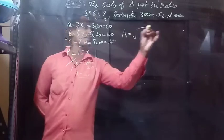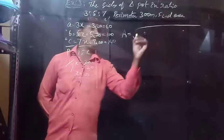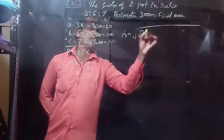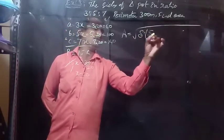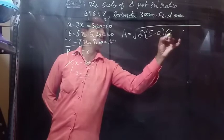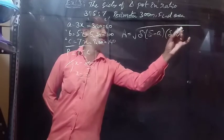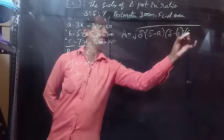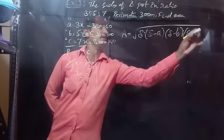We have the formula: Area A is equal to √(S × (S−a) × (S−b) × (S−c)), which is Heron's formula.